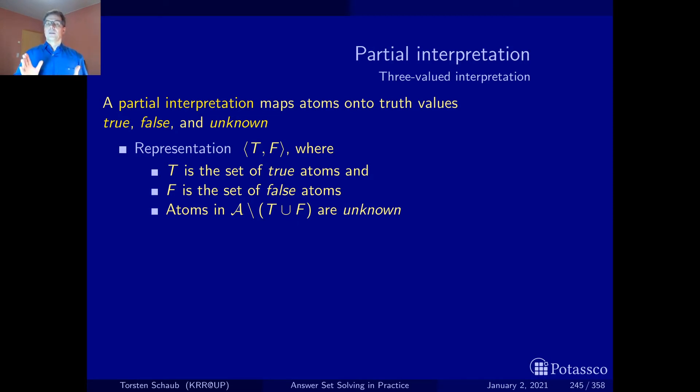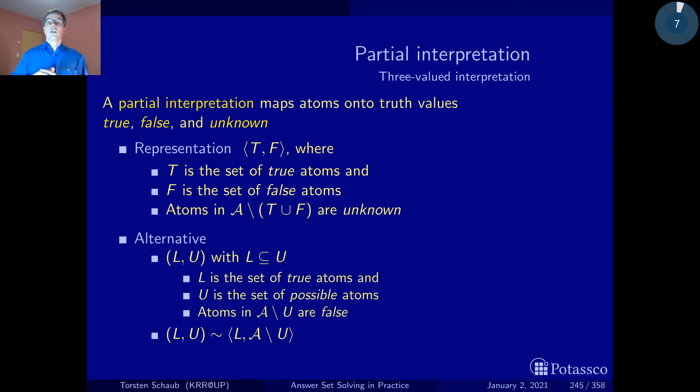We've already seen such three-valued interpretations in a different representation where we talked about the lower and upper bound. We wanted to represent partial interpretations. Here we left the false atoms implicit while there we leave the unknown atoms implicit. The lower bound consisted of the true atoms, but the upper bound consisted of the possible atoms.